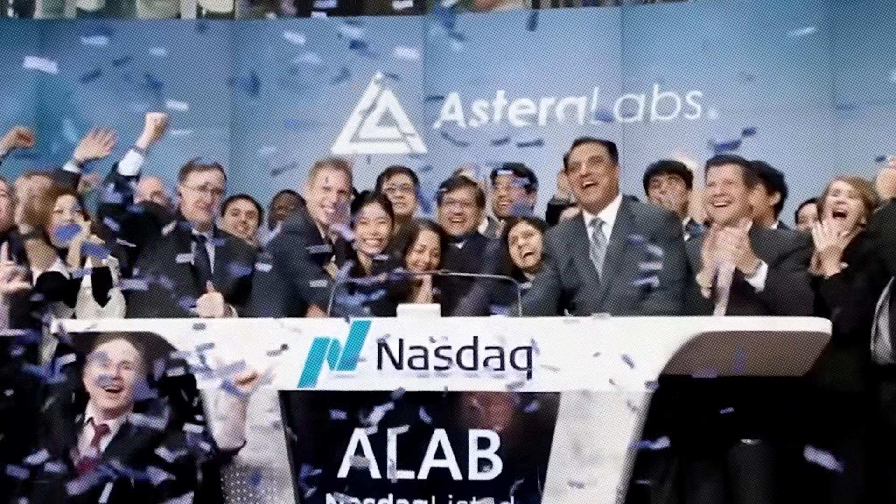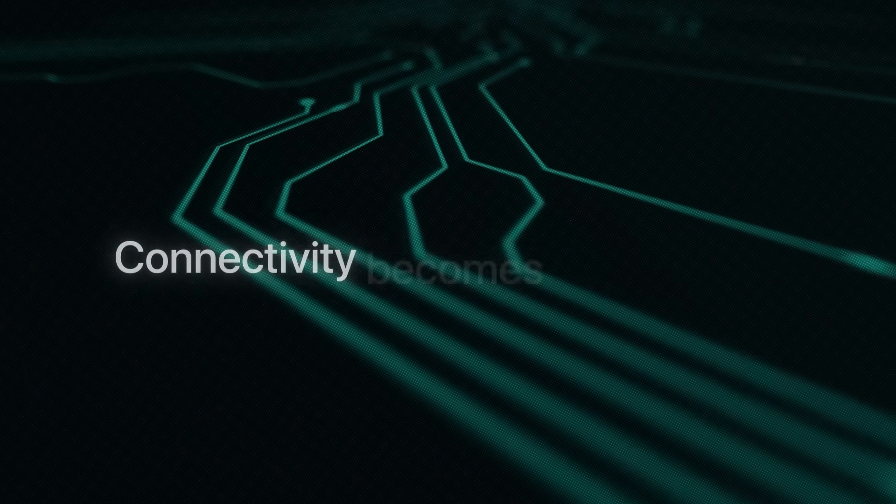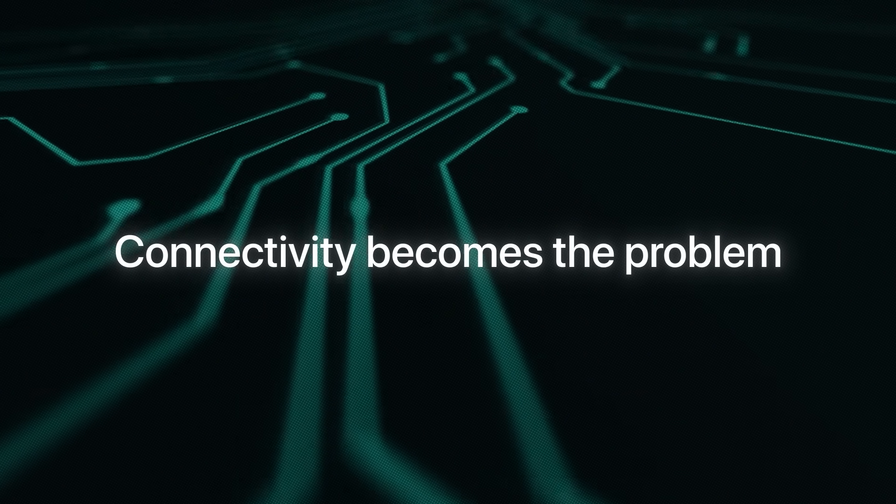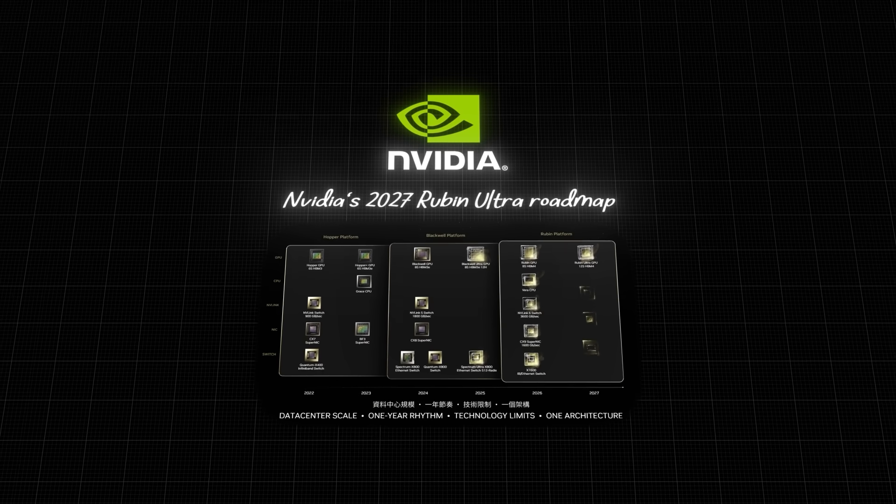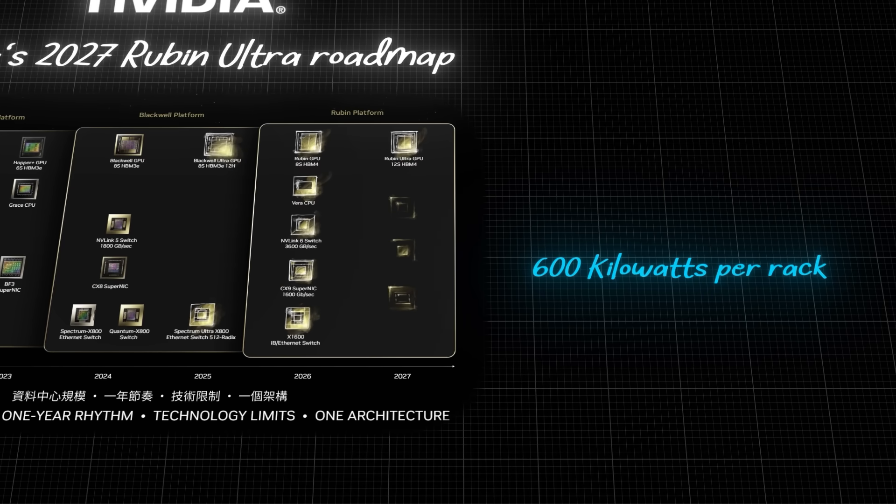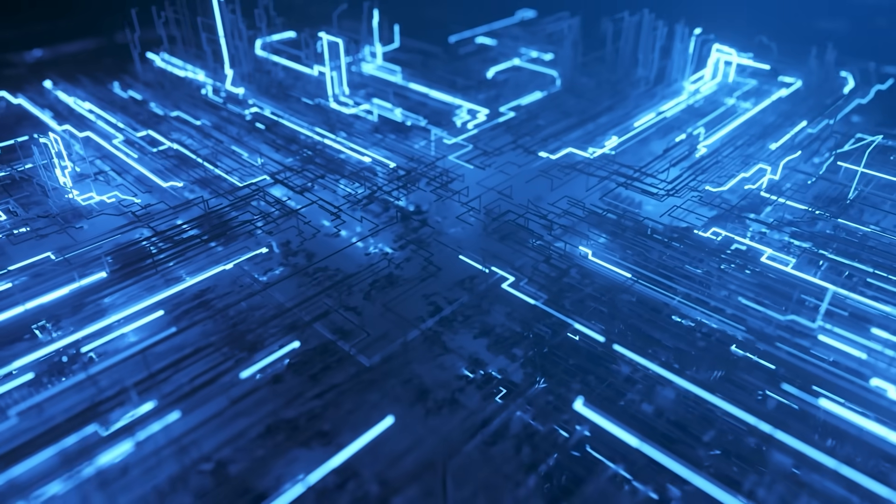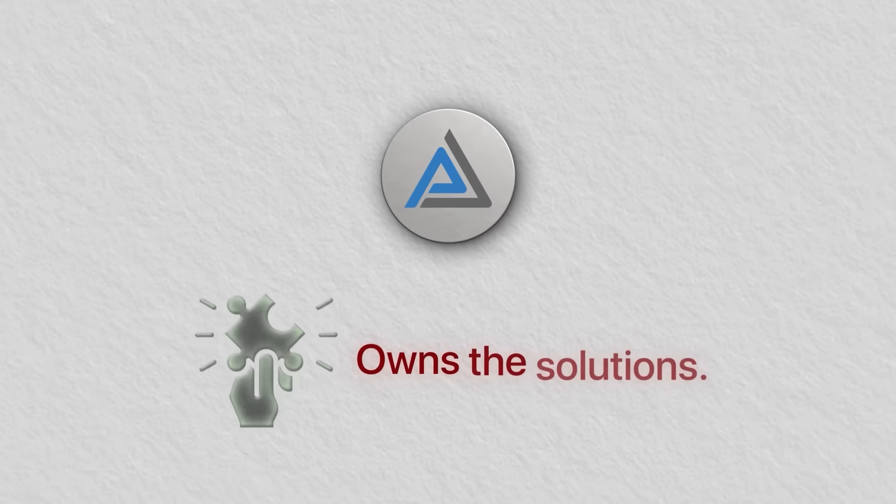But despite these challenges, Astera has a path to become one of the first highly successful publicly traded AI startups. Because as we approach physical limits of electrical signaling, connectivity becomes the problem. NVIDIA's 2027 Rubin Ultra roadmap shows 576 GPU chiplets, consuming 600 kilowatts per rack. So without revolutionary connectivity, these systems simply won't work.